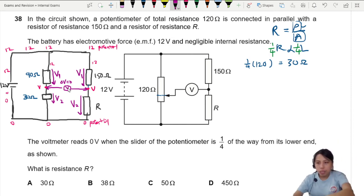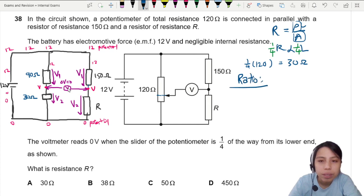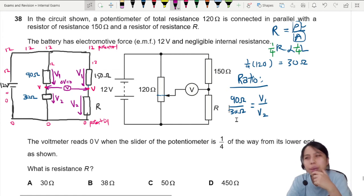There is this concept in potential dividers where you can do a ratio. So let's say I take the ratio of the left side. This ratio of resistance, 90 over 30, 90 ohm over 30 ohm, is the same ratio as the potential difference shared by the two resistors, V1 over V2. This is a potential divider concept. If you're a bigger resistance, you take more voltage or potential difference.